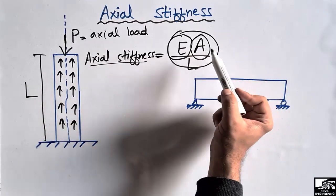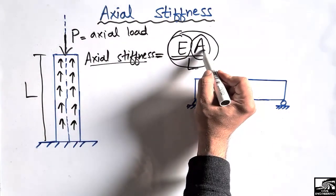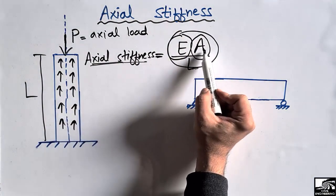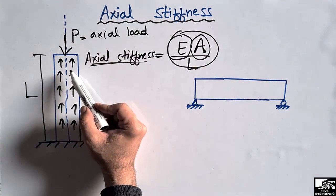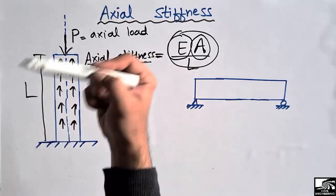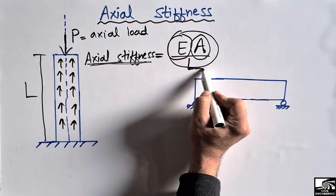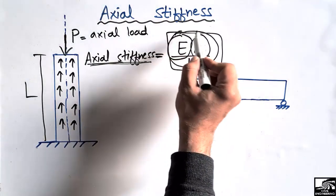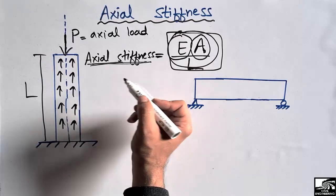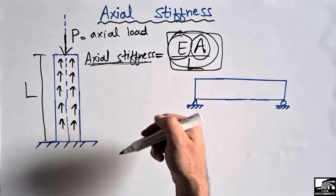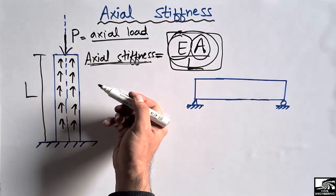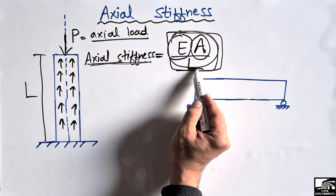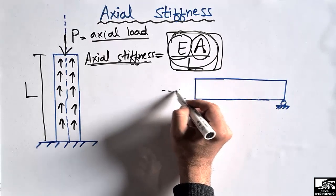If you have a larger cross-sectional area A, you will have higher axial stiffness, since it is directly proportional to area. Similarly, if a higher elasticity material is used, you will have higher axial stiffness and higher resistance to the incoming load. If you have a smaller length L, you will also have higher axial stiffness. These three factors — elasticity, area, and length — are very important in deciding axial stiffness.